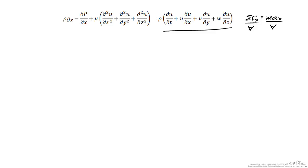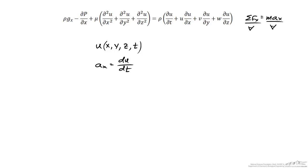Let's examine the right hand side of the x component. The x component of velocity for a fluid we will call lowercase u, and strictly speaking u could be a function of x, y, z, and time. The x component of acceleration for the fluid is equal to the time derivative of u. But because u is not simply a function of time — it is also a function of x, y, and z — we need to use the chain rule to perform this differentiation.